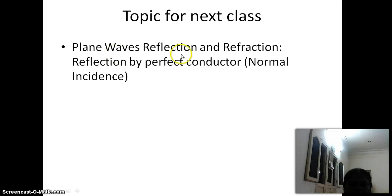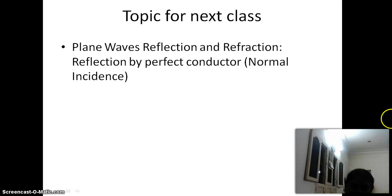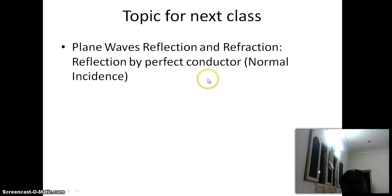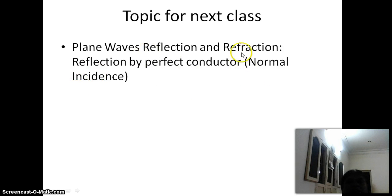Next class, we will discuss plane waves - reflection and refraction. When a wave propagates from one medium to another, we examine how waves are reflected or refracted. Two types of incidence will be considered: normal incidence, where the incident wave is perpendicular (90 degrees) to the surface, and oblique incidence, which is any angle other than 90 degrees. As per the syllabus, only normal incidence is included, but be thorough with oblique incidence as well.